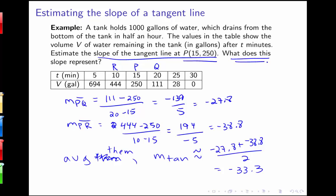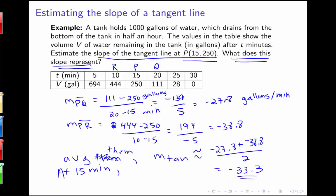One thing to focus on is what this slope actually represents. We know this is approximately the slope of the tangent line at point p, but what are the units? Looking back at our computations, we were subtracting gallons and dividing by minutes. So these numbers are actually rates in gallons per minute. This tells us that at 15 minutes, the water is draining at about 33.3 gallons per minute. We can interpret that rate in the context of this problem.